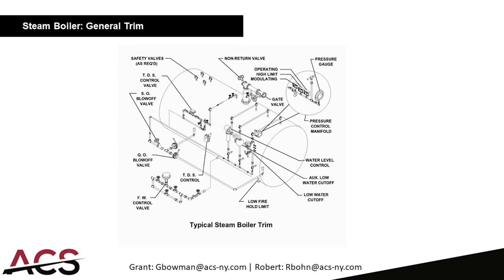The water level control gives a modulating signal to your feed water valve if you have a modulating feed water system, or a dry contact to start a pump otherwise. The low water cutoff is typically a float type, and you would have an auxiliary low water cutoff that is a probe type. For a typical high pressure boiler, you'll also have a non-return valve and a gate valve — all of these components are ASME pieces manufactured by the boiler manufacturer. In the upper right you have operating limit, high limit, and modulating controls, as well as your boiler pressure gauge.